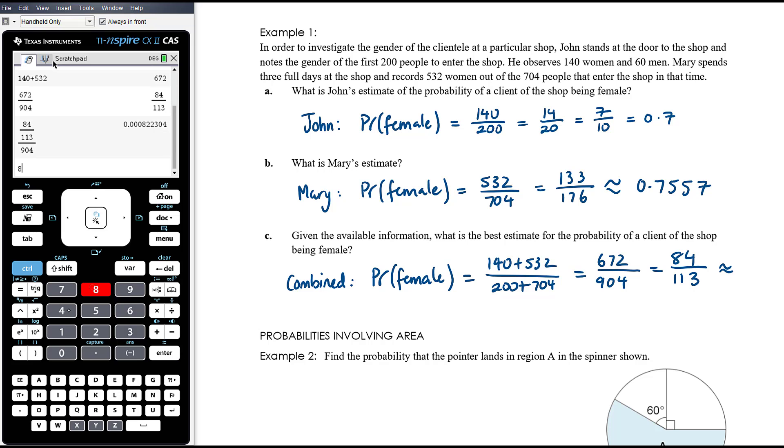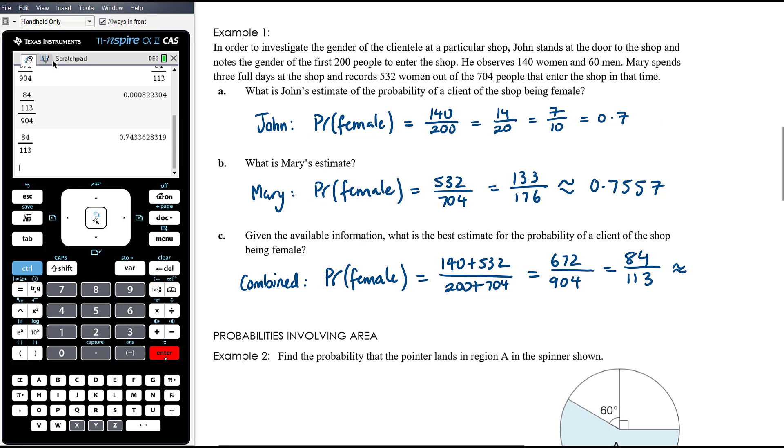84 over 113 is approximately 0.7434. So somewhere between their two estimates, but definitely closer to Mary's because she had a lot more data, is the best prediction given what we've got there.